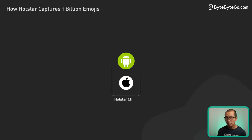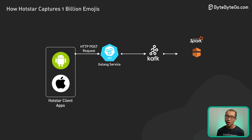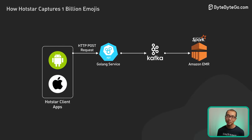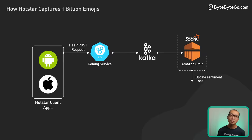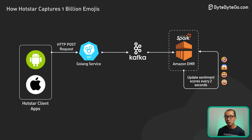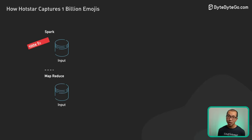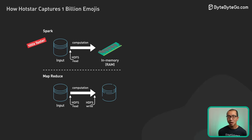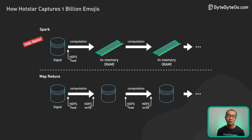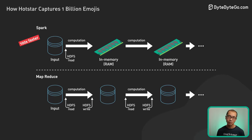Next, Spark, a fast unified analytic engine built on the JVM, processes this torrent of emoji streams from Kafka, updating sentiment scores every two seconds to reflect changing audience moods in real time. By leveraging in-memory processing, Spark can run certain workloads a hundred times faster than previous disk-based big data platforms like Hadoop MapReduce.